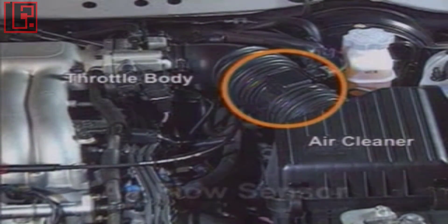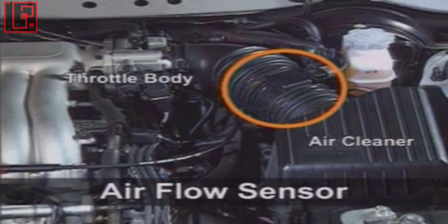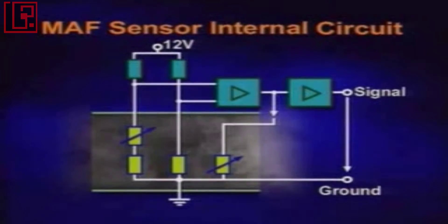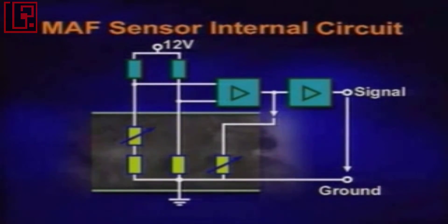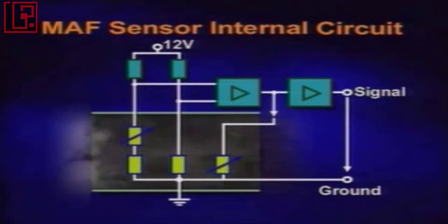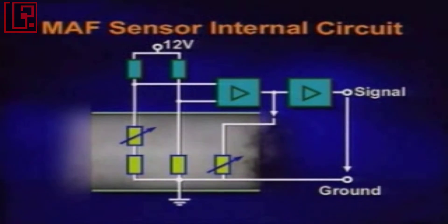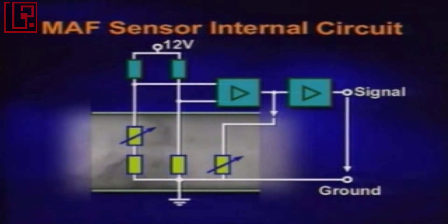The mass airflow sensor is installed between the air cleaner and the throttle body. The mass airflow sensor measures the amount of intake air by the cooling effect of hot film. The cooling effect varies depending on the airflow changes, which cause voltage changes.